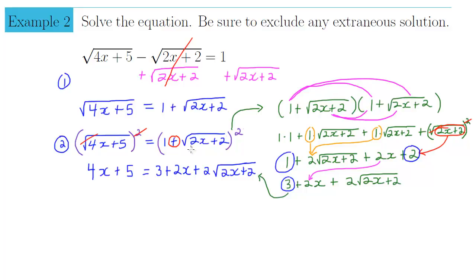After FOILing out (1 + √(2x+2))², we get 3 + 2x + 2√(2x+2). As you can see, after this huge FOILing problem and simplifying the right side, we still have a square root left. We only got rid of one of our square roots by squaring both sides, which means we have to again isolate the square root and square both sides one more time.